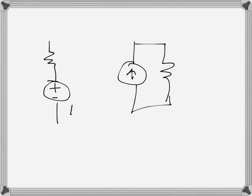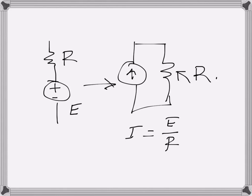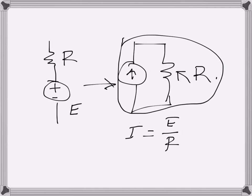The conversion is very simple. If the voltage source has value E and the resistance is R, then the current source value becomes E over R, and the resistance stays R. Similarly, converting a current source I with parallel resistance R into a voltage source gives a series voltage of I times R, and the resistance remains R.